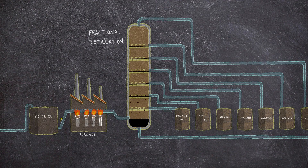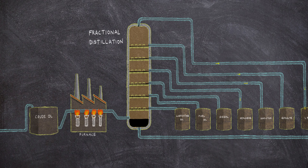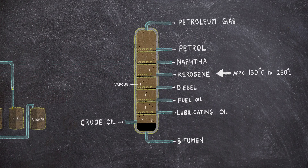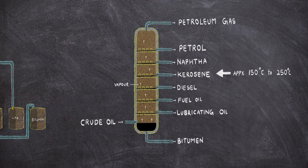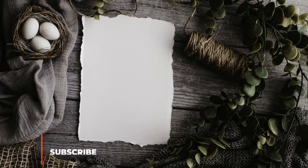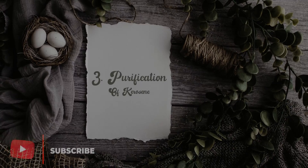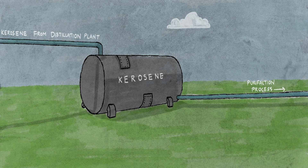Tall distillation columns more efficiently separate hydrocarbon mixtures because they allow more time for high boiling point compounds to condense before they reach the top of the column. The condensed liquid fractions can be collected separately. The fraction that is collected between approximately 150 and 250 degrees centigrade is kerosene.